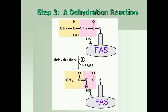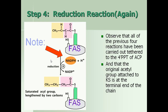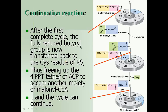This alpha-beta unsaturated butyryl ACP then accepts two more hydrogens from another molecule of NADPH plus H in the second reduction step. NADPH plus H reduces the alpha-beta unsaturation to form saturated butyryl ACP. This four-carbon saturated butyryl ACP is now formed at monomer 2.